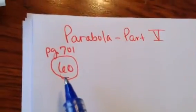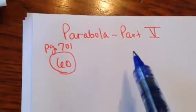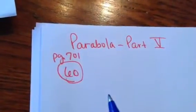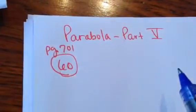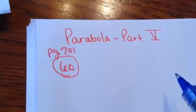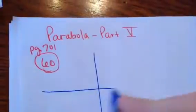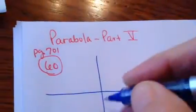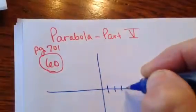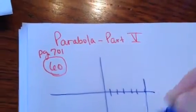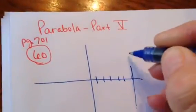We're finally on part 5 of the parabola. I'm going to look at number 60. This just gives you some information and I want you to fill in the blanks. If the directrix of a parabola is given by x equals 6 — let's see what that looks like. Here's 1, 2, 3, 4, 5, 6. So here's my directrix right there.